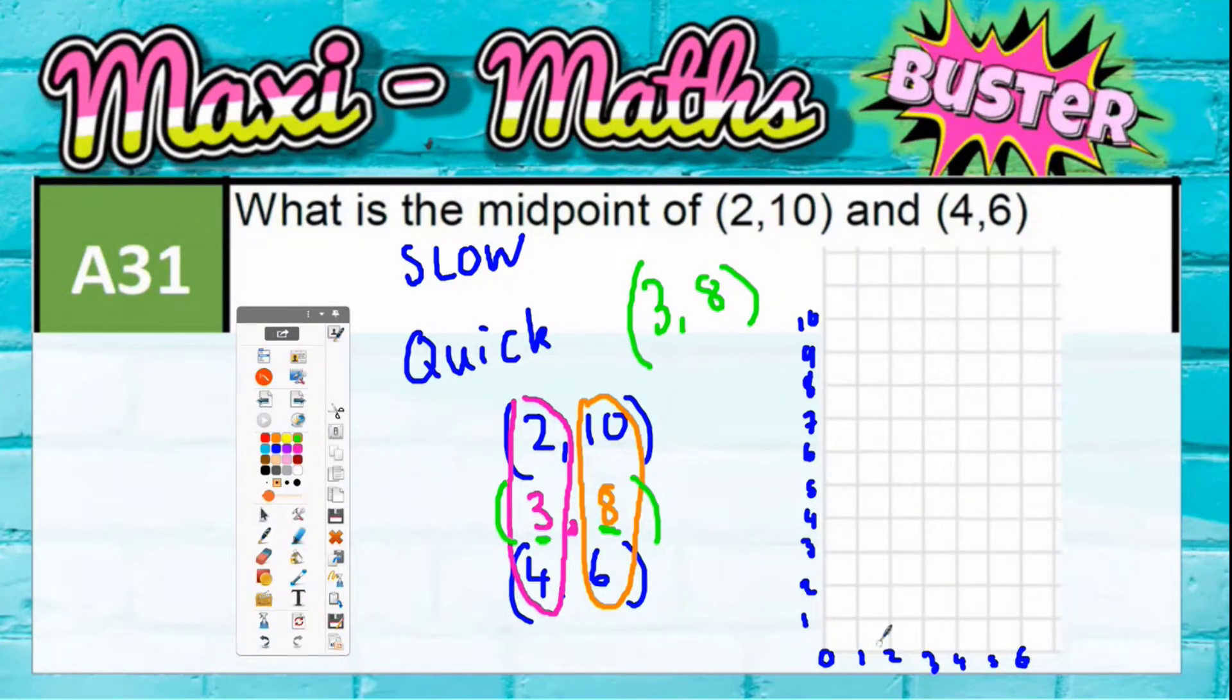So 2 comma 10 would be there. 4 comma 6 would be there. And then if you join those with a line, the midpoint would be the middle of that line.